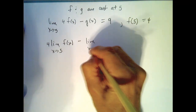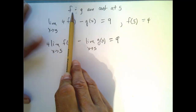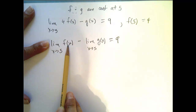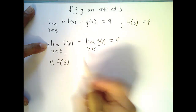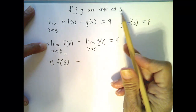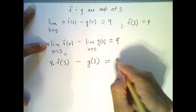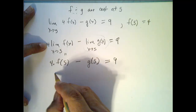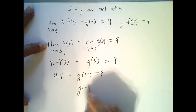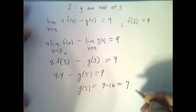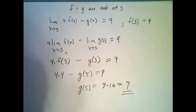So that gives 4 times the limit as x goes to 5 of f of x, minus the limit as x goes to 5 of g of x, equals 9. Since f is continuous at 5, the limit as x goes to 5 of f of x equals f of 5 — that is the definition of continuity. Similarly, g is continuous at 5, so this limit equals g of 5. So 4 times f of 5 minus g of 5 equals 9. Since f of 5 is 4, we get 4 times 4 minus g of 5 equals 9, which means g of 5 equals 9 minus 16... wait, that gives 16 minus g of 5 equals 9, so g of 5 equals 7. And I used continuity to answer that.